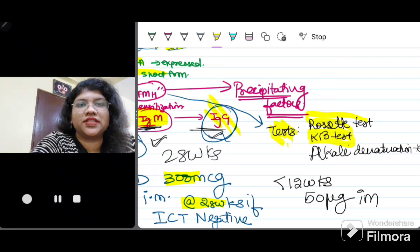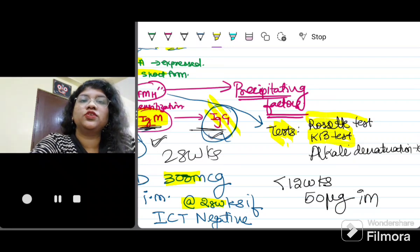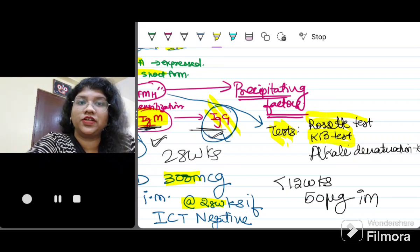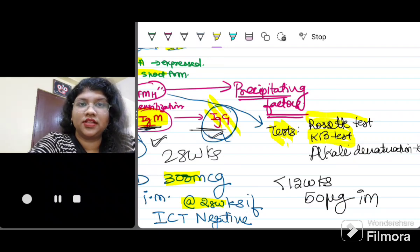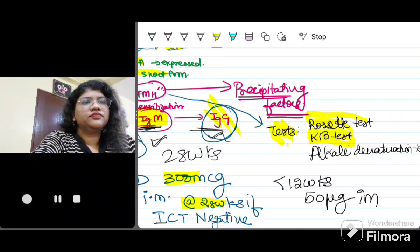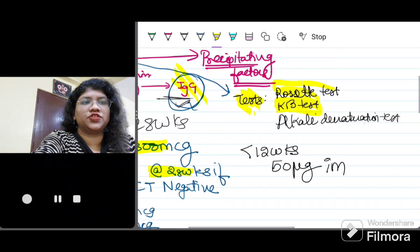KB test is very important - Kleihauer-Betke test. It is a quantitative test. Remember that in routine clinical practice, we do not do these tests because first of all, they are not available everywhere considering our low resource settings. Also it is time taking for results to come and they just delay the management. So these are more important from a theoretical perspective. Also it is an alkaline denaturation test.